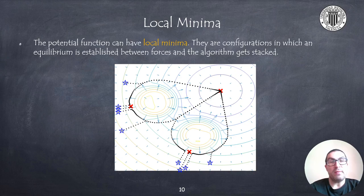The attractive function has a single global minimum in the goal configuration. However, when combined with repulsive function, local minima might appear in some configurations that might be difficult to predict if the whole configuration space is not fully analyzed.